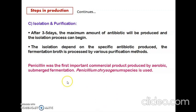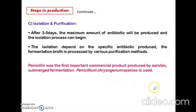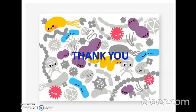An important point: penicillin was the first important commercial product produced by aerobic submerged fermentation, and Penicillium chrysogenum species is used for this. That concludes the topic of microbial production of antibiotics. Thank you for listening.